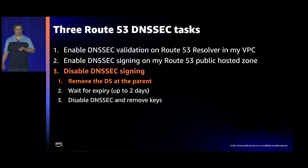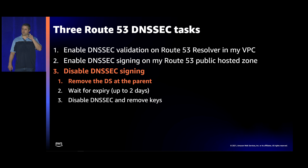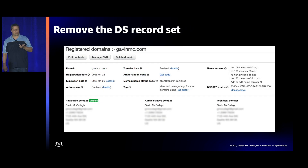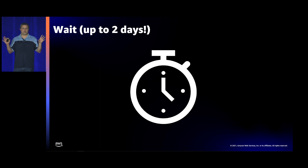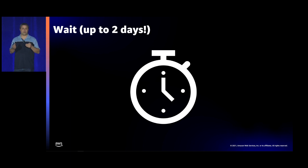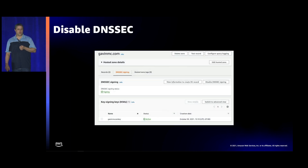The last important task is disabling DNSSEC correctly. You must go in reverse order. First, remove the Delegation Signer record at the parent — go to the registrar console, manage keys, and delete that key. Then wait a significant period, because many resolvers on the internet may have cached that DS record. The .com zone sets a TTL of one day for DS records, so you really need to wait at least that long after removing the DS before disabling signing on the zone itself.